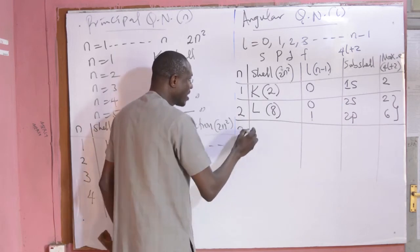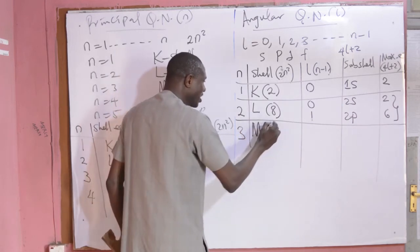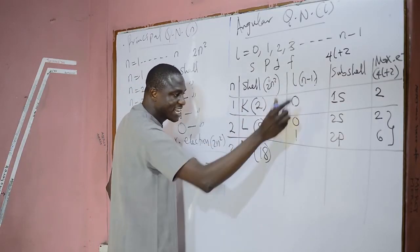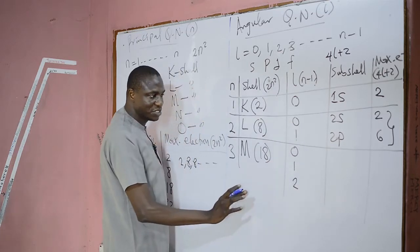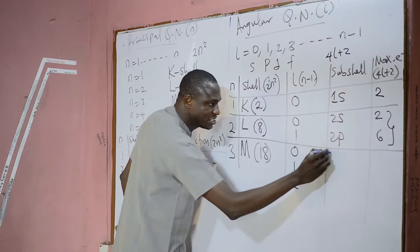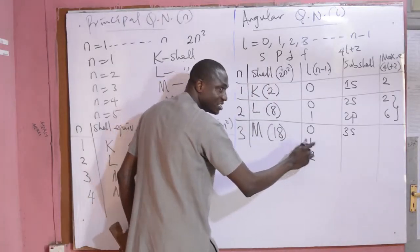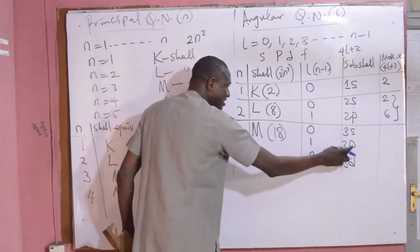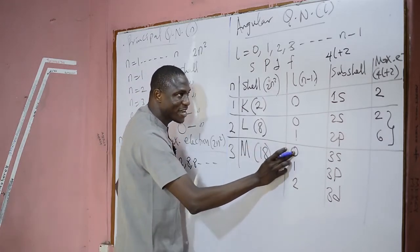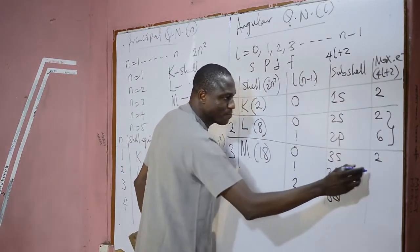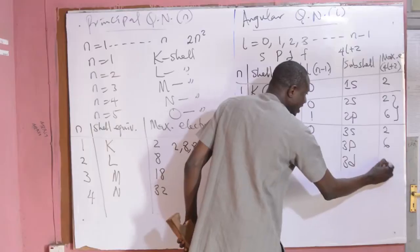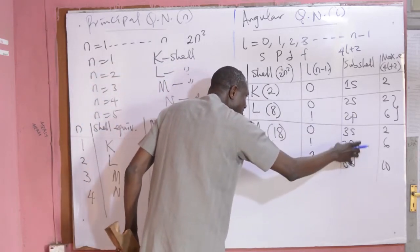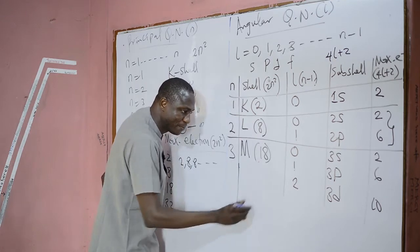When N=3, we have M shell with a maximum of 18 electrons. How many sub-shells? 3−1=2, so starting from 0: 0, 1, 2 — we have 3 sub-shells. The 3S sub-shell is from the third energy level, the 3P sub-shell is from the third energy level, while the 3D sub-shell is also from the third energy level, giving 2+6+10=18 electrons.